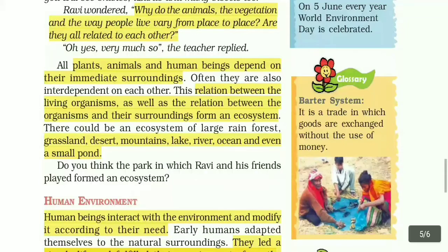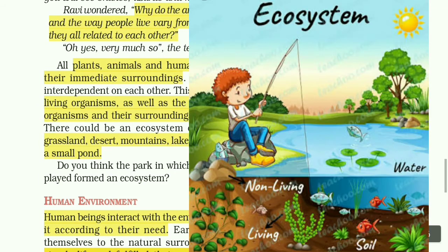This relation between the living organisms, as well as the relation between the organisms and their surroundings, forms an ecosystem. An ecosystem can be a large rainforest, grassland, desert, mountain, lake, river, ocean, and even a small pond.